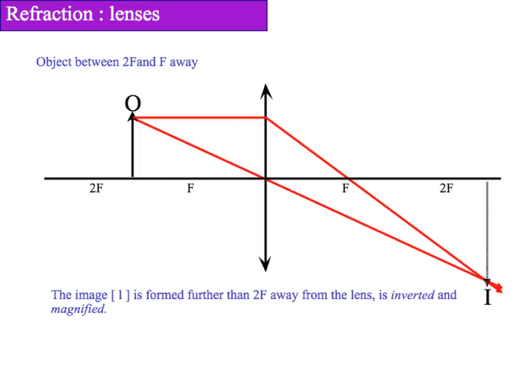If we move our object closer, this time between 2f and f away so it is between 1 and 2 times the focal length away, the image is formed further away than 2f and is inverted and this time magnified. We can see our straight line that has been refracted down through f as well as our second straight line which has gone undeviated through the centre of the axes.